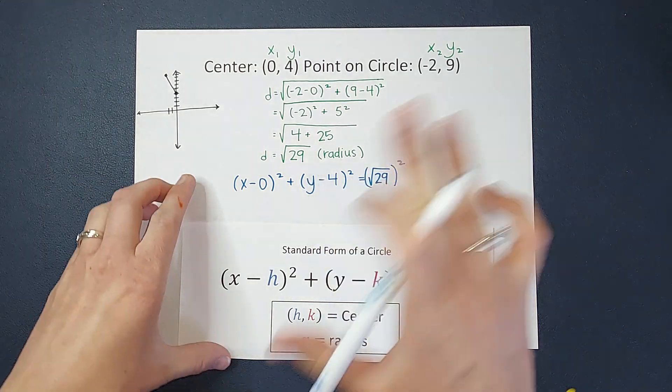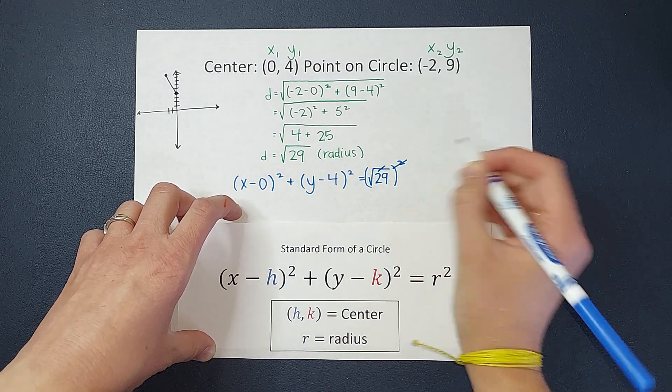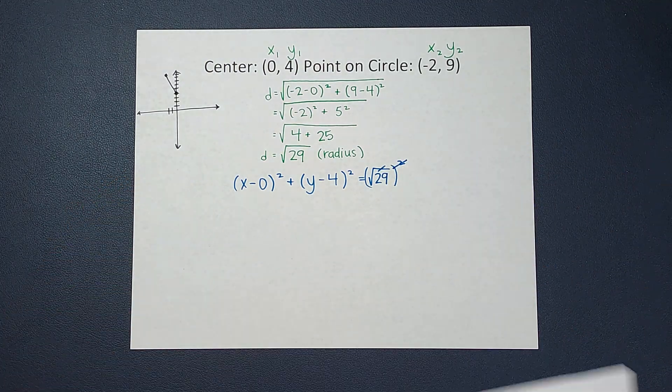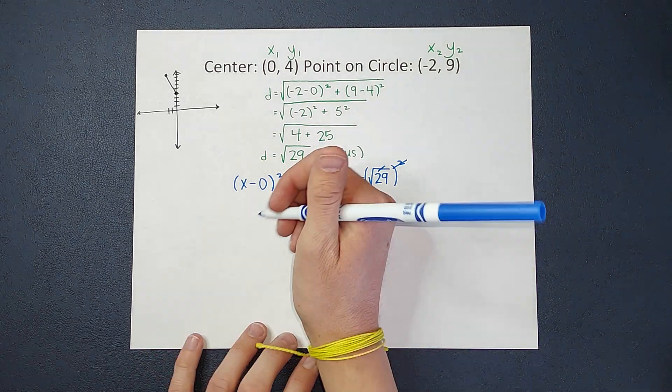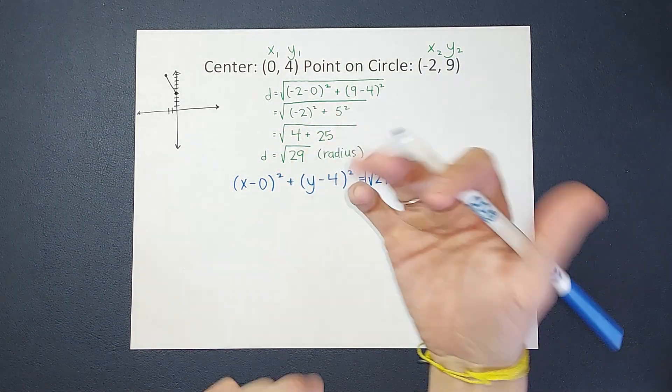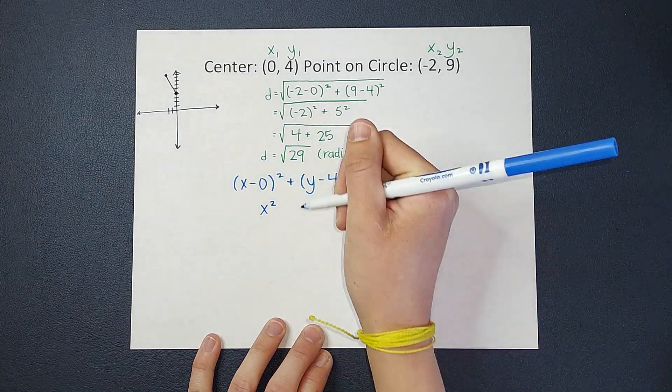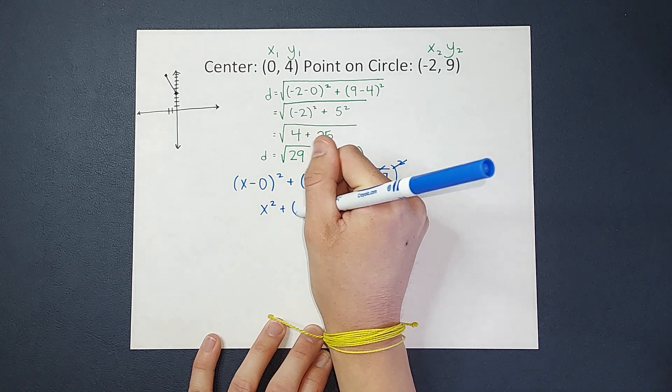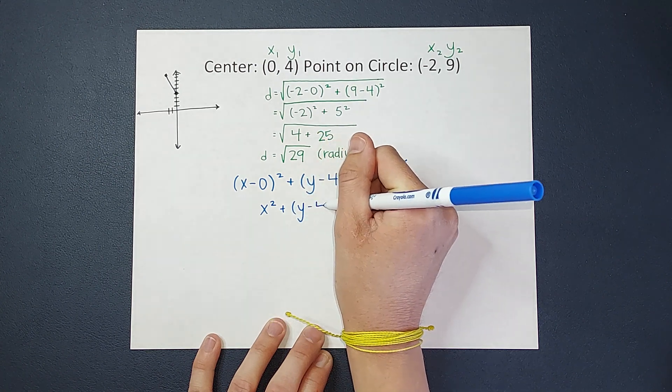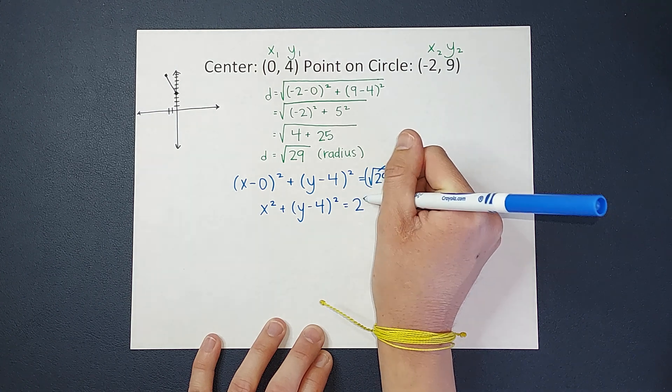That looks a little scary, but guess what? Square roots and squares cancel each other out, so I'm just left with 29. So let's quickly rewrite this. x - 0 is just x, so I can just write it as x² + (y - 4)² = 29.